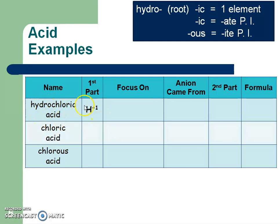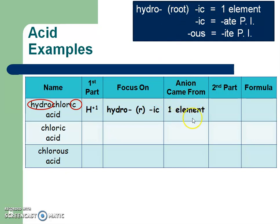Hydrochloric acid. The first part is always going to be H plus 1. Now we need to focus on the name: hydro, the root of that element, and then ic. That means it came from one element. Now I look at the root — chlor — that reminds me of chlorine. Looking on my ion periodic table chart, chlorine is Cl with a negative 1 charge. I have plus 1 and negative 1; the charge numbers are the same, so they just go away, and now I can just rewrite the parts: H and Cl.